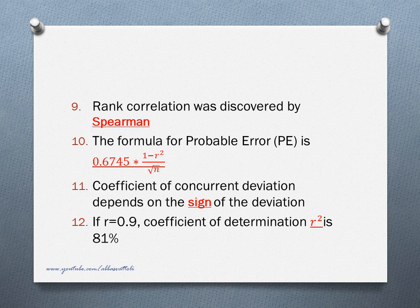Coefficient of correlation explains direction and degree of relationship between two variables, not the magnitude. Rank correlation was discovered by Spearman. Karl Pearson's coefficient of correlation is also called product moment correlation. The formula for probable error is 0.6745 into 1 minus R-square divided by root N. Coefficient of concurrent deviation depends on the sign of the deviation. If R is equal to 0.9, coefficient of determination, that is R-square, is 81 percent.